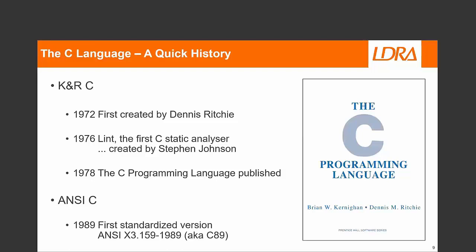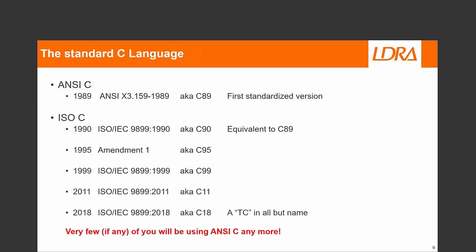In 1989, the C language was standardized for the first time — ANSI-C, as it's universally known, or C89. The standards don't stay the same. A year later, ANSI-C was fast-tracked as an ISO standard and became known as C90. It's exactly the same as C89.